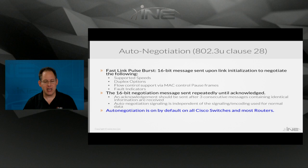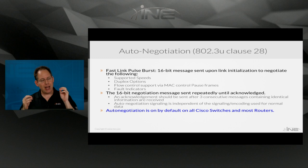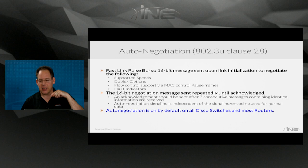Auto-negotiation was first developed under the 802.3U specification under the clause 28 section. Before auto-negotiation existed, back in the days of just 10 megabit per second Ethernet, as soon as you plugged in the cable, the NIC card would start sending out a little pulse — a heartbeat. It was a single electrical pulse every 16 milliseconds, and that was called a Normal Link Pulse, or NLP.